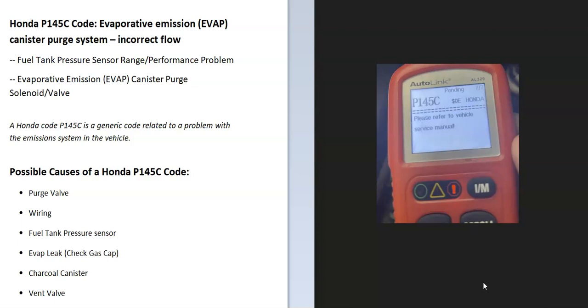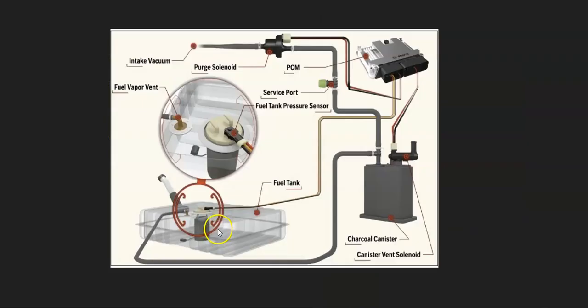It's going to need troubleshooting to find out why. Some possible causes of a P145C code: it could be the purge valve, could be in the wiring, could be the fuel tank pressure sensor, could be an EVAP leak, could be a charcoal canister, or could be a bad vent valve.